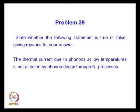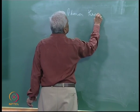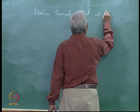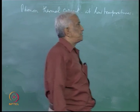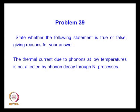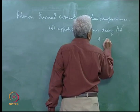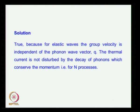Next, we are given a statement and asked to check whether it is true or false and to justify the answer. The statement is that the thermal current due to phonons at low temperatures is not affected by phonon decay through Normal (N) processes. We are asked whether this statement is correct or not. The statement is true.